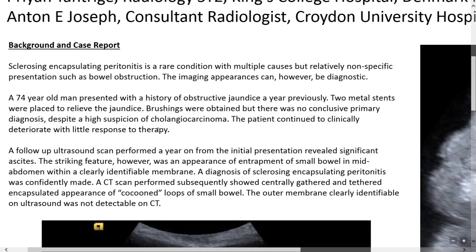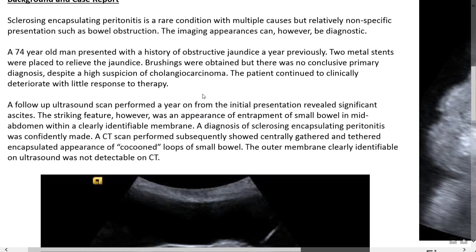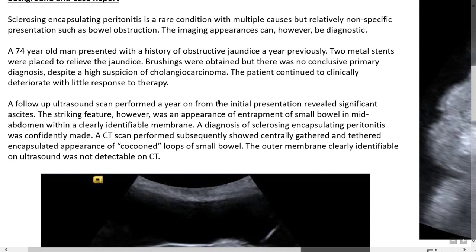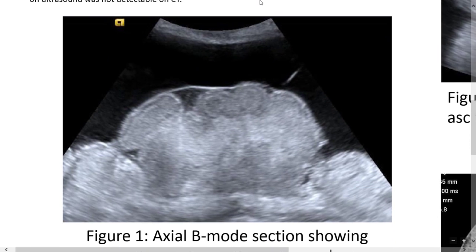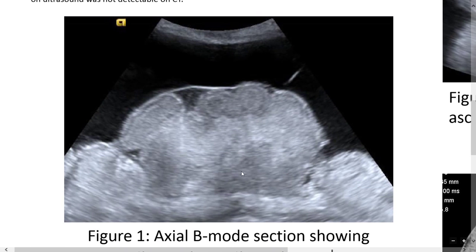There was no conclusive primary diagnosis despite a high suspicion of cholangiocarcinoma. The patient continued to clinically deteriorate with little response to therapy. A follow-up ultrasound scan performed a year on from the initial presentation revealed significant ascites. The striking feature however was an appearance of entrapment of small bowel in the mid-abdomen with a clearly identifiable membrane.